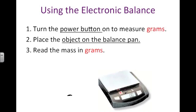Using electronic balance is easier. You simply begin by turning the balance on with the on switch. Make sure it says grams right there. Place the object on the balance pan and it comes to zero, then read the mass of the item.